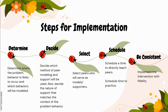For real-time peer modeling, the script should include the specific behaviors, when the peer should model, what the peer should say, and what to do while modeling. It should also include how to prompt the target peer to imitate if that student doesn't respond after the model, and how the model student can give feedback and reinforcement to the target student.